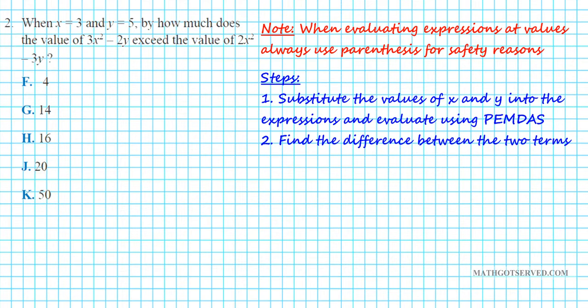Let's take a look at problem number 2. It says: when x equals 3 and y equals 5, by how much does the value of 3x² minus 2y exceed the value of 2x² minus 3y? When evaluating expressions at a particular value, always use parentheses for safety — that prevents errors with signs or the order of operations. We'll substitute the values, evaluate using the order of operations, then find the difference between the two expressions.